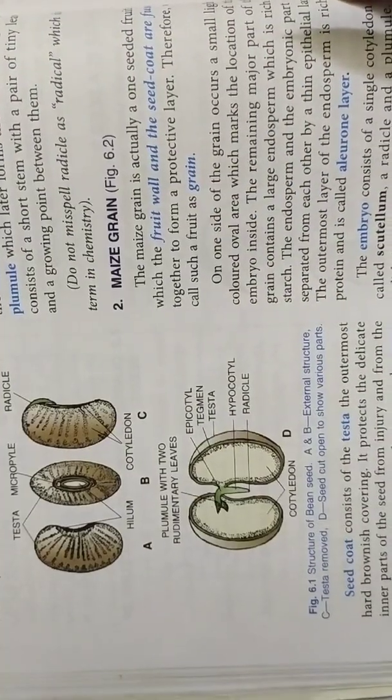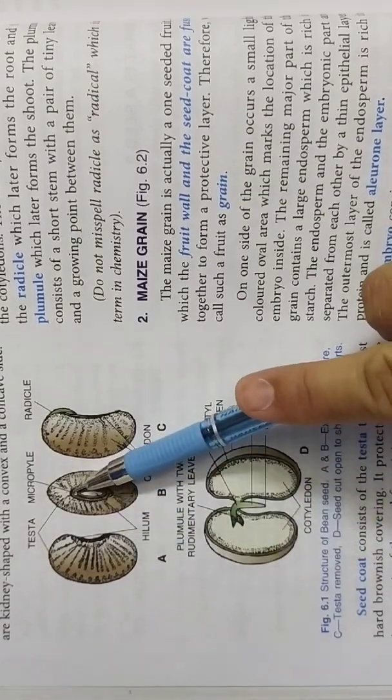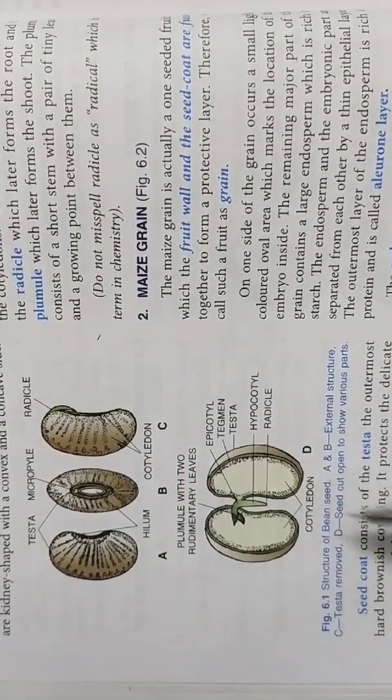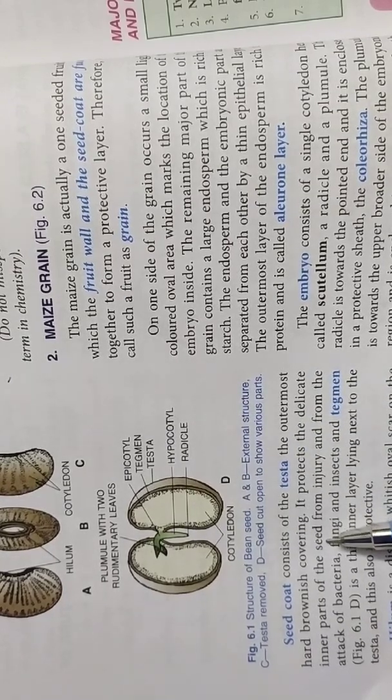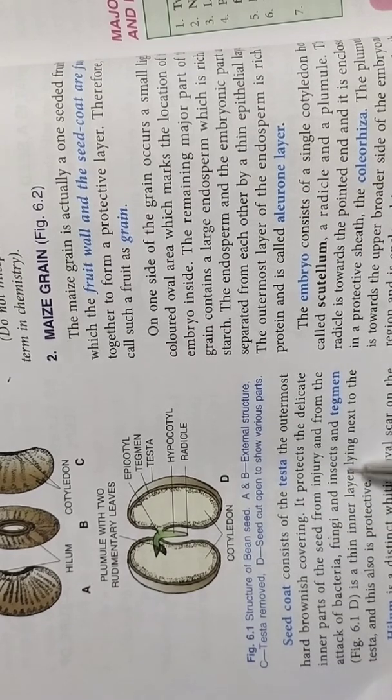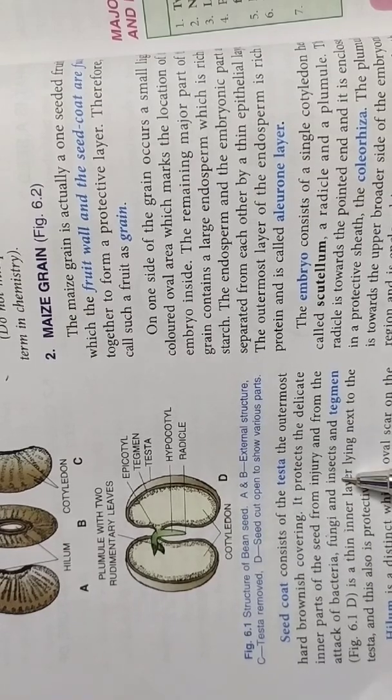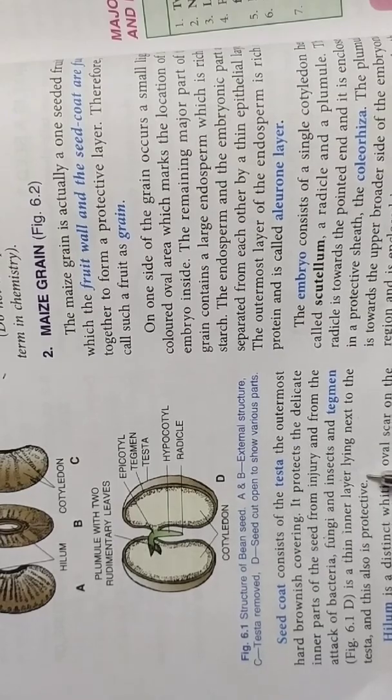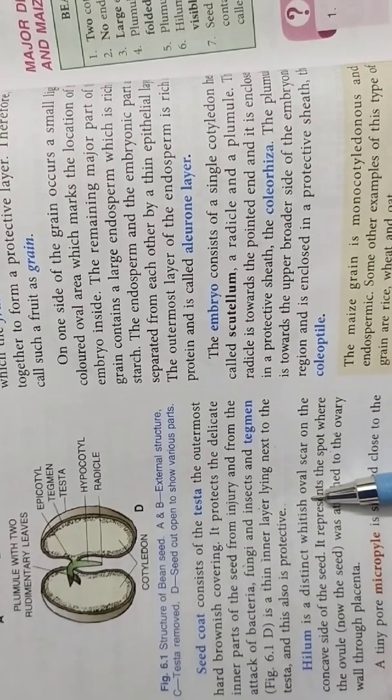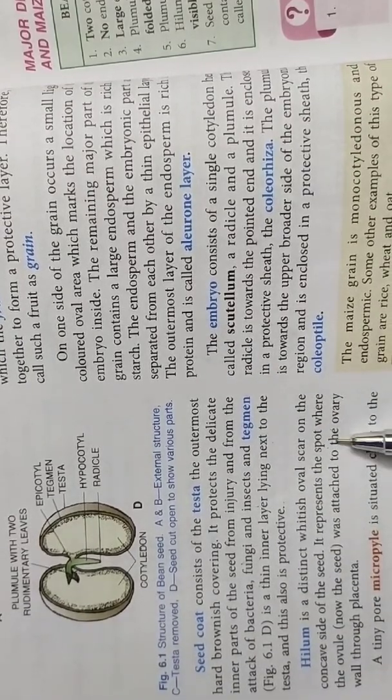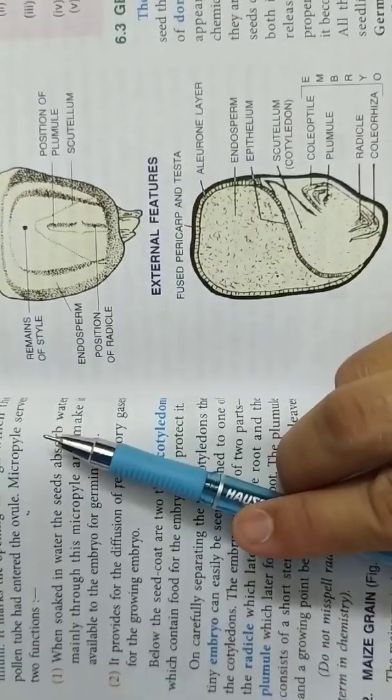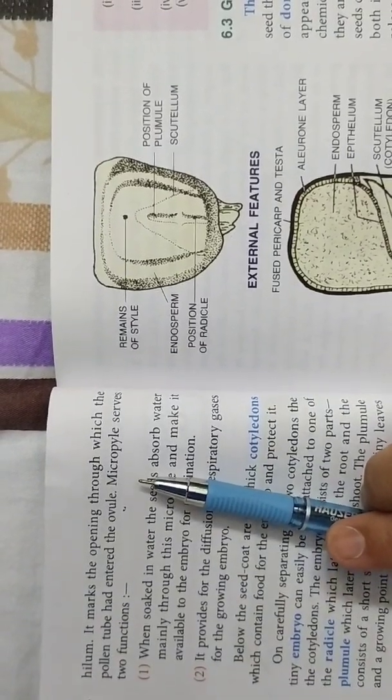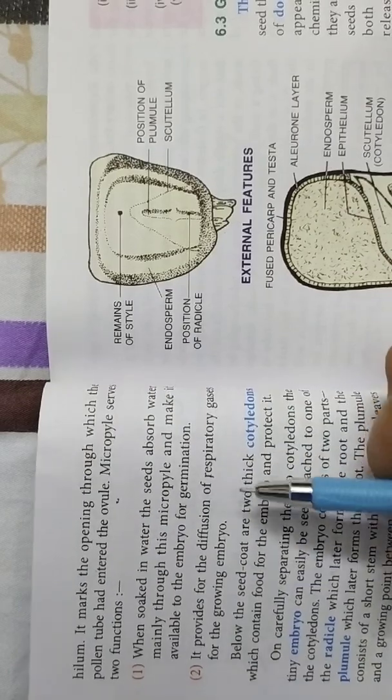You can see here now in your diagram given in your book. Testa, micropyle, and this is the radicle coming out. Seed coat consists of testa, the outermost hard brownish covering, and it protects the delicate inner parts. Seed coat function is to protect the seed embryo from injury, from mechanical shock, and also attack of bacteria, fungi and insects. And tegmen is a thin inner layer lying next to the testa. This is also protective. Then I told you about hilum. It is a distinct whitish oval scar on the concave side of the seed. It represents the spot where the ovule was attached to the ovary through the placenta. A tiny pore micropyle is situated close to the hilum. It marks the opening through which the pollen tube had entered the ovule. Micropyle serves two functions. One is absorption of water and second is diffusion of gases.